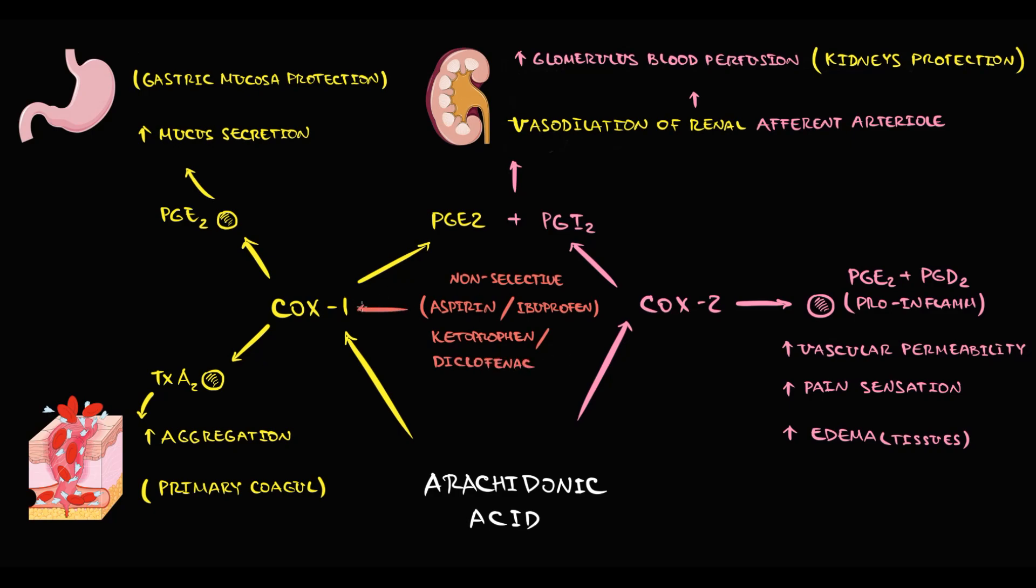By inhibition of COX-1 enzyme, they decrease the production of thromboxane A2. With decreasing thromboxane A2, aggregation decreases, and we can analyze this by prolongation of bleeding time. The positive effect is that this will cause decrease in the rate of clot formation, and we can use this for prophylaxis of thrombosis.